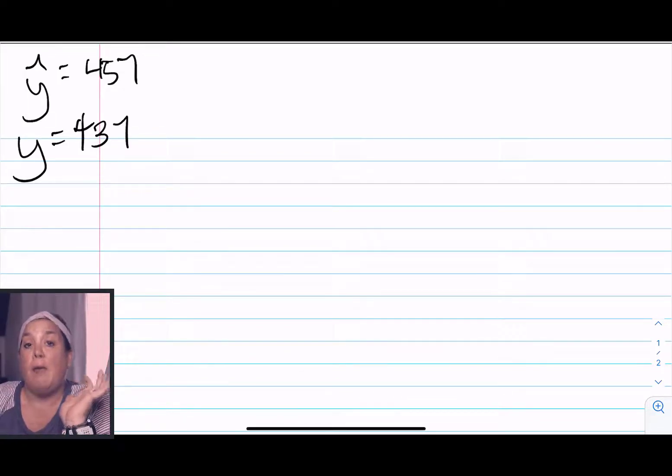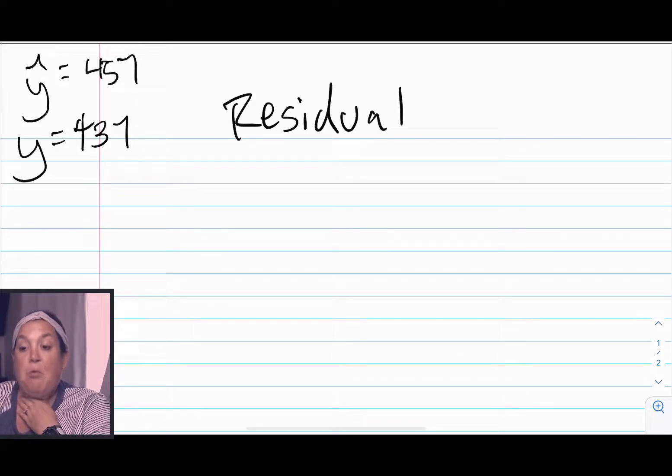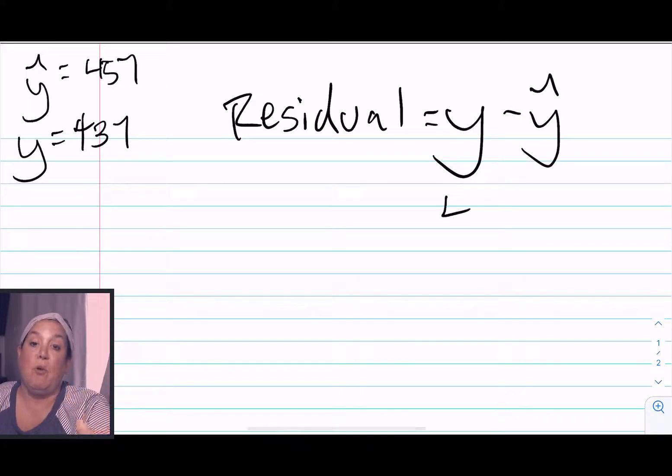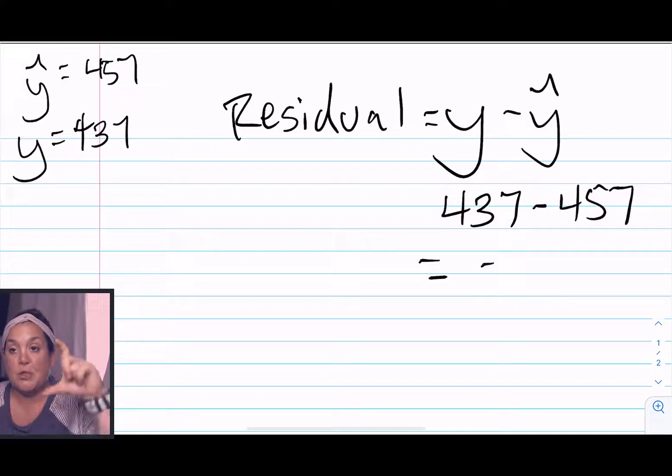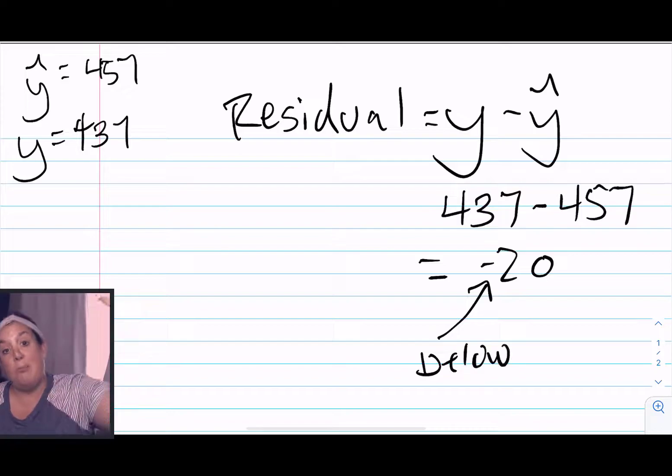So if we were to calculate a residual for me, for this point, we would have y minus y hat. So 437 minus 457, and remember that residual is giving us the distance the observed value y is from the line, which is what y hat is representing.